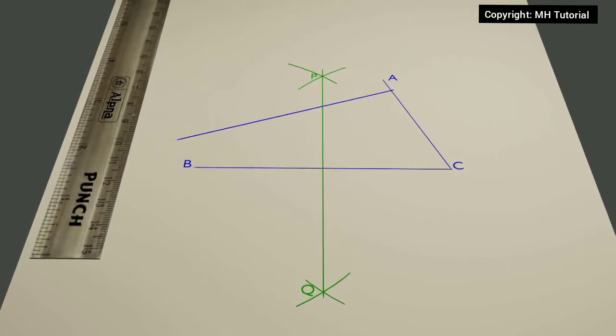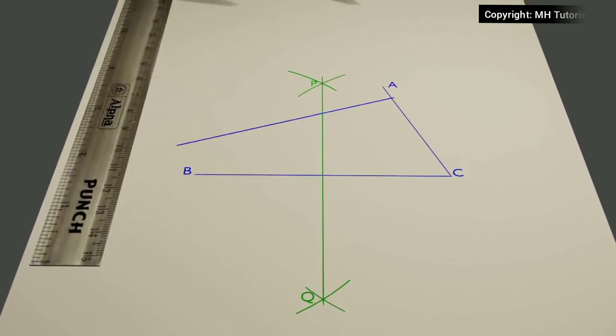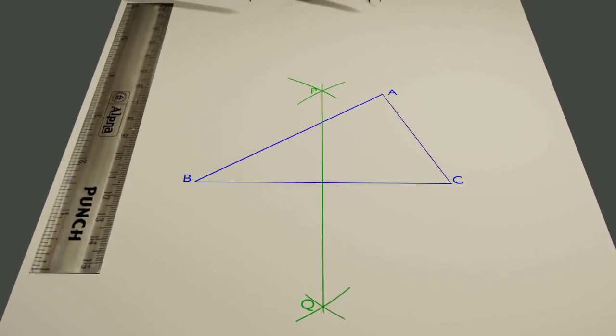Then, the bisector of the arm AB will be drawn.